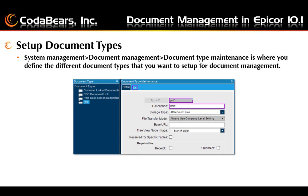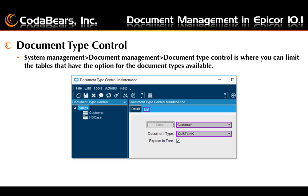Fill in the base URL for the storage types of file system or attachment link if you're not going to use what's already in the company. The tree view node image allows you to pick an image to represent the document in the tree. Checking the reserved checkbox for specific tables means you will limit where this document type can be used via the document type control screen. The required for receipt or shipment checkboxes indicate if this document type will be used when the part record has the receipt or shipment documents required checkbox checked.